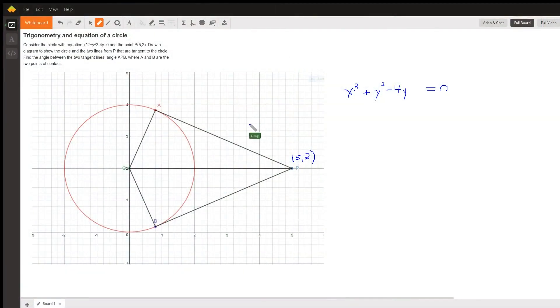To solve this problem, first determine the center and radius of this circle by completing the square on y² - 4y.